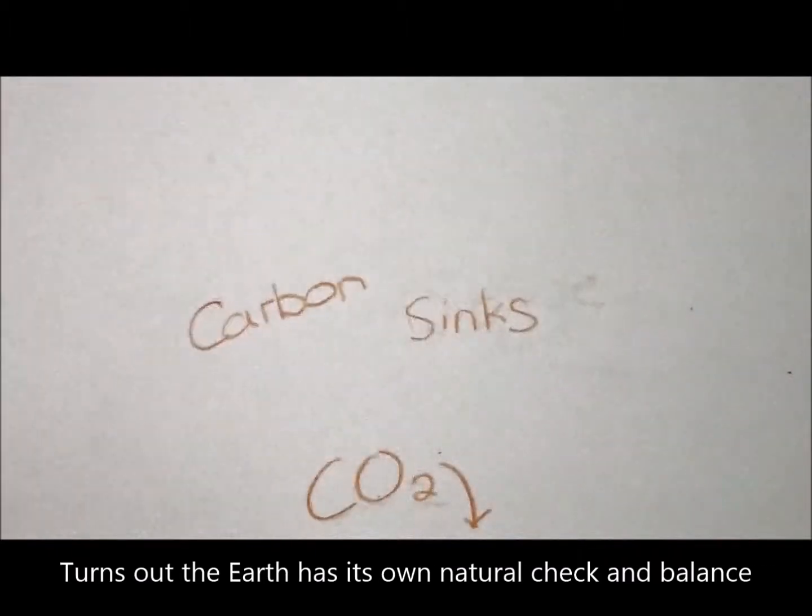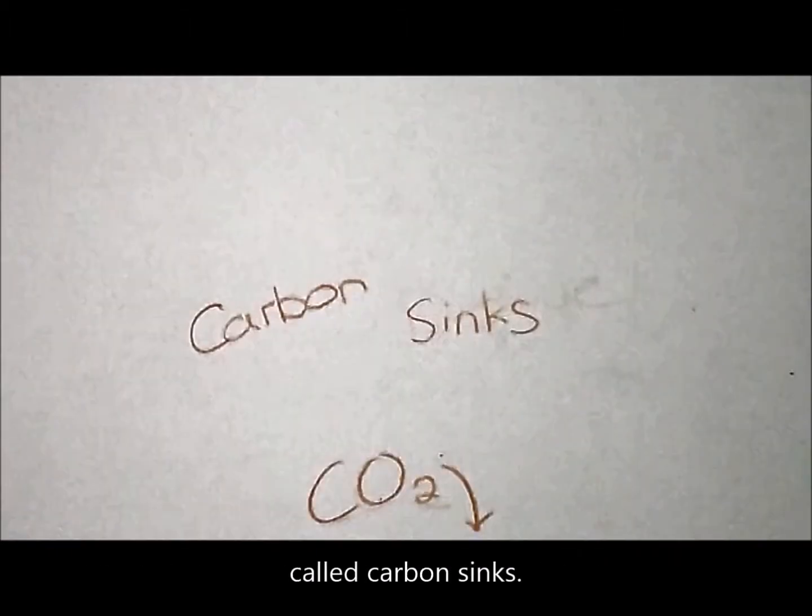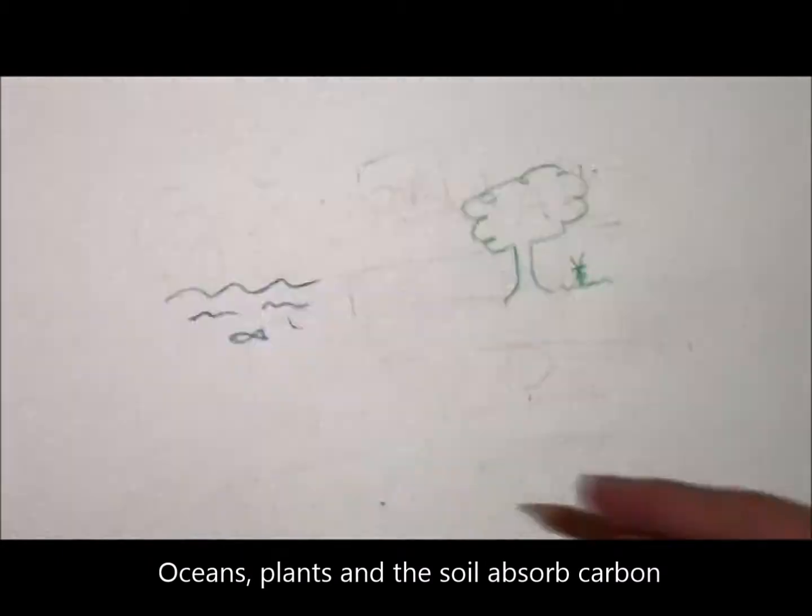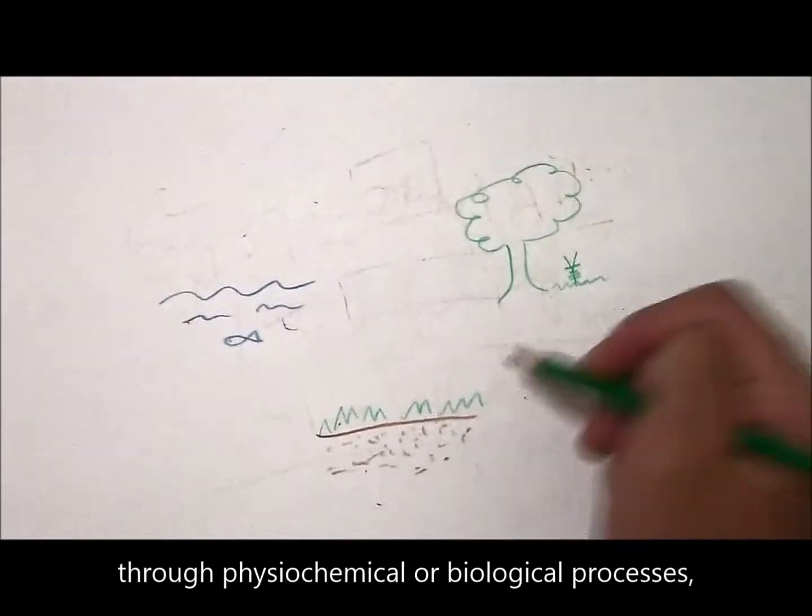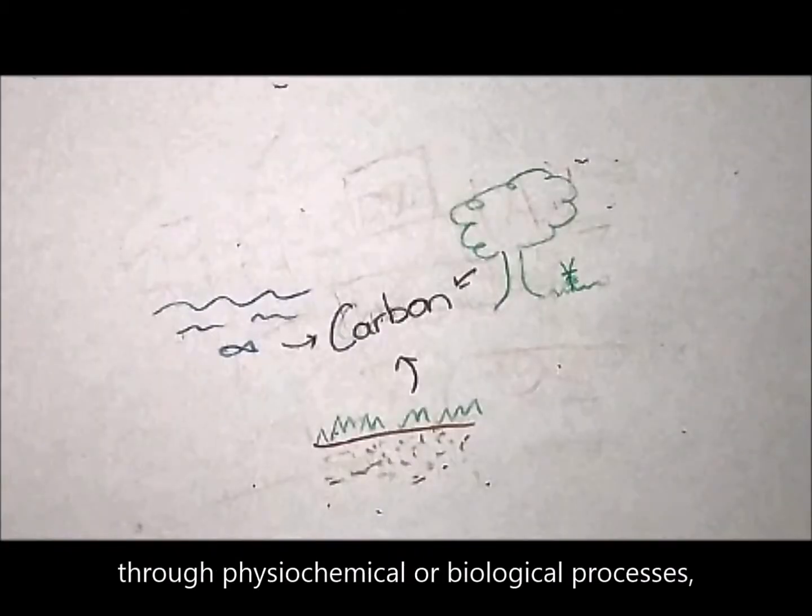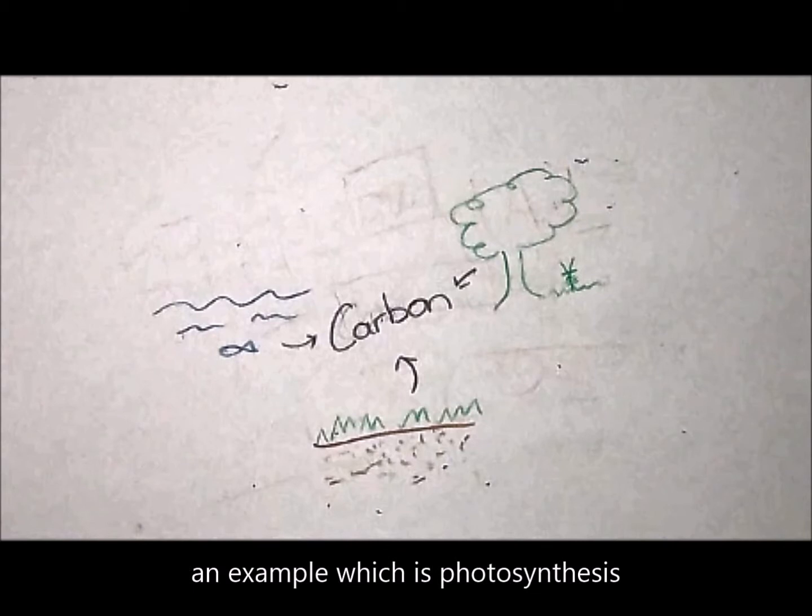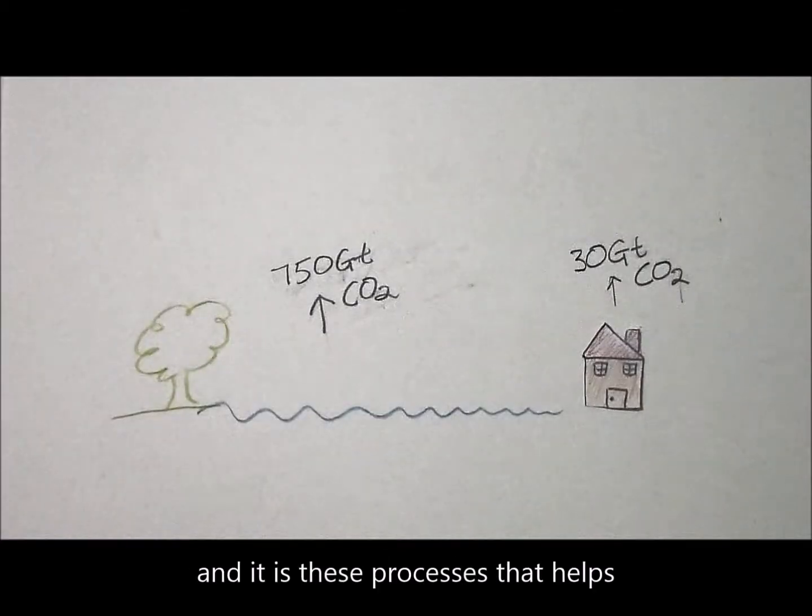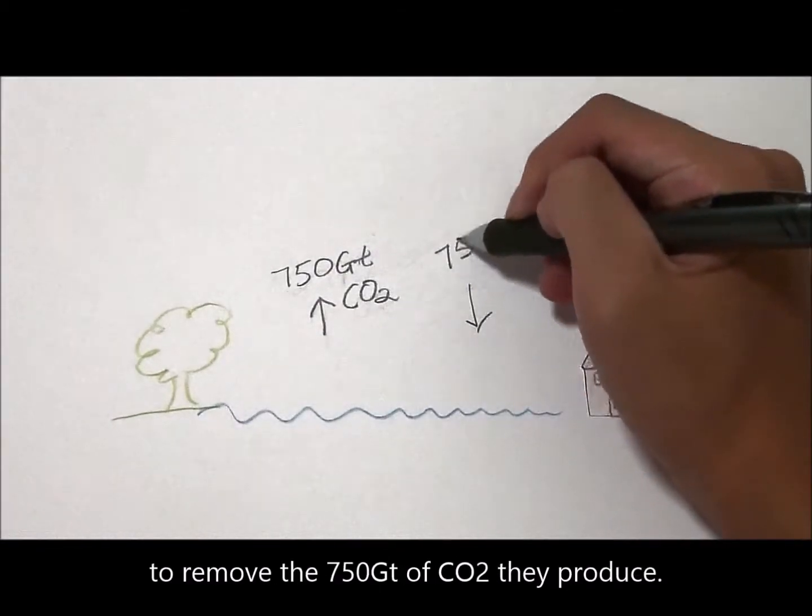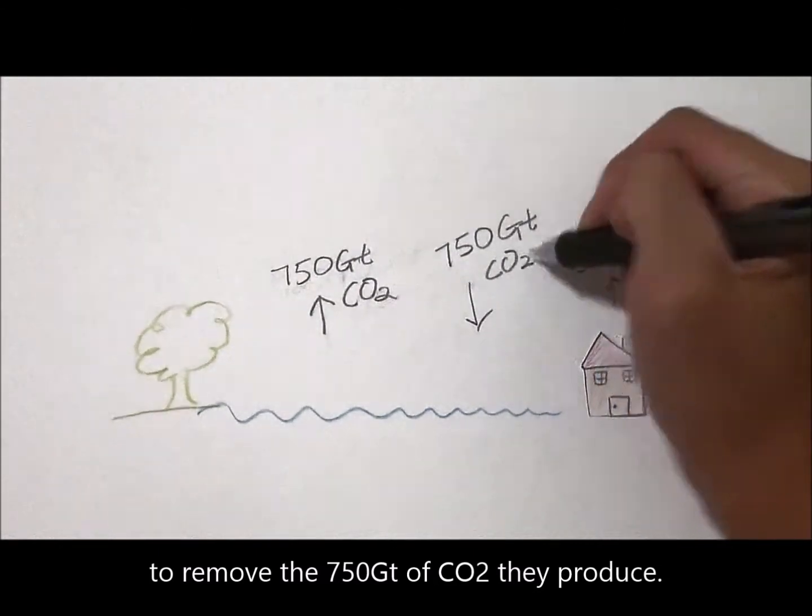Turns out that Earth has its own natural check and balance called carbon sinks. Oceans, plants and the soil absorb carbon through physiochemical or biological processes, an example which is photosynthesis. And it is these processes that help to remove the 750 gigatonnes of CO2 they produce.